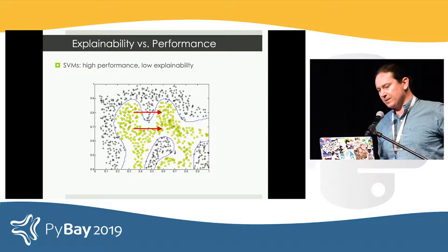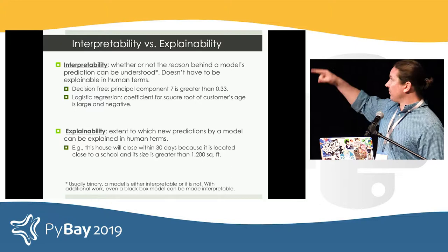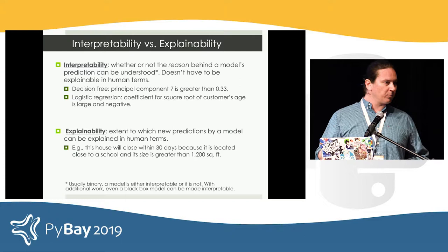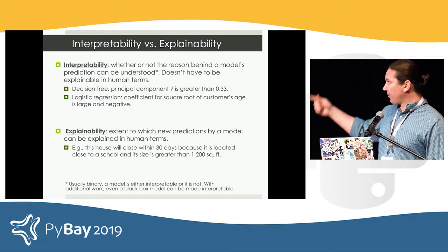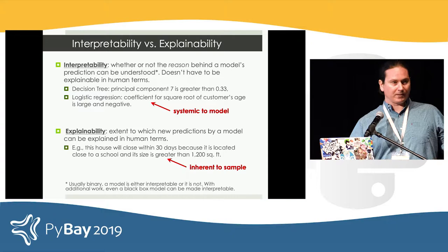Before I get into the example, I want to say that there's a difference between interpretability, which you may have heard, and explainability. Interpretability means that you understand the reason behind a model's decisions — so that reason can be that principal component number seven is greater than 0.3. But that's not explainable in human terms; we don't know what principal component number seven is. Explainability means in human terms: this house will close within 30 days because it is located near a school and it's greater than 1,200 square feet. I like to think of interpretability as being systemic to a model, and explainability as being inherent to the sample and the predictions that the model makes.